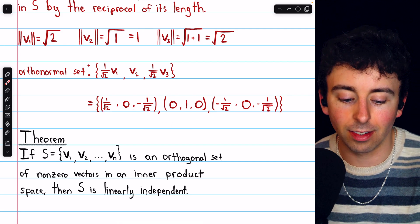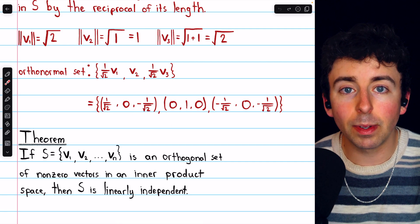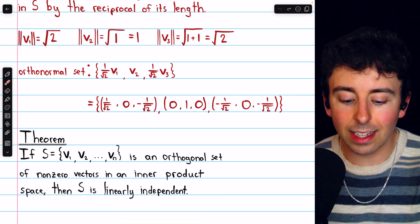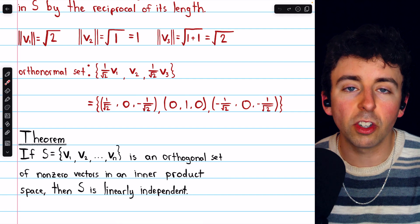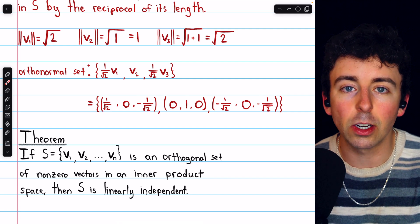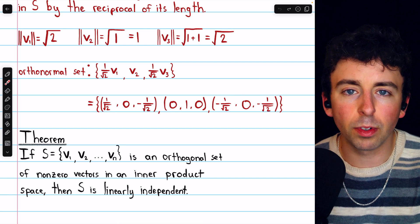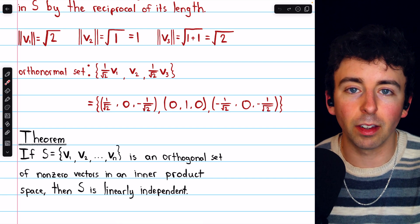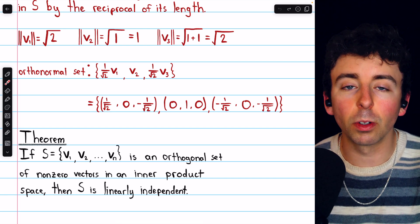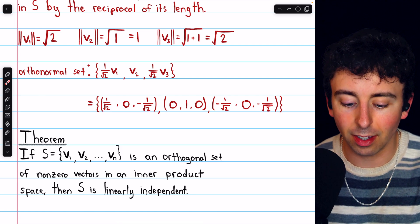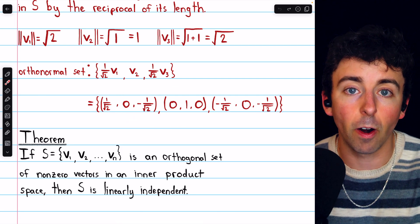Since this set is also orthonormal, it happens to be an orthonormal basis for R cubed. Again, it's the fact that these vectors are all orthogonal to each other that lets us conclude it's a linearly independent set from this theorem. And it's a previous result that in a vector space of dimension n, a linearly independent set with n vectors will be a basis. So that's how we know this is a basis for R cubed.